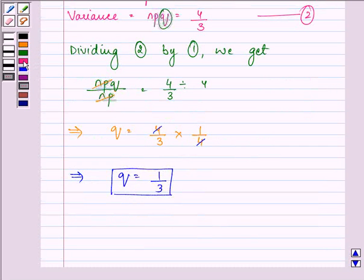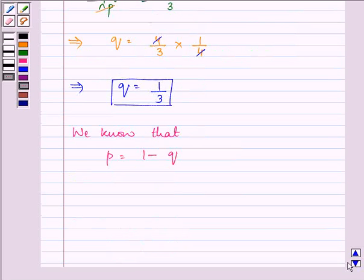Now further, we know that p is equal to 1 minus q. So if q is 1 by 3, then the value of p will be equal to 2 by 3.